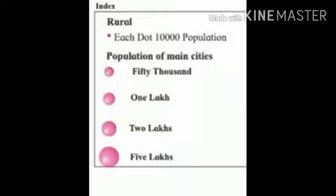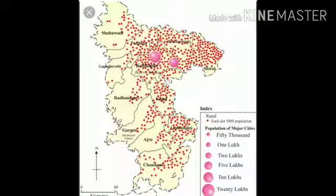The number of dots to be given for the value of a variable in each sub-administrative unit needs to be decided first. For example, you can see the map of Kualapur district on the screen. In the index, a red color dot shows 5000 population — each dot equals 5000 population. The pink color dots change in size: the smallest has a value of 50,000 and the largest has a value of 20 lakhs. This means the number of dots, the value of the dots, and the size of the dots are all decided.